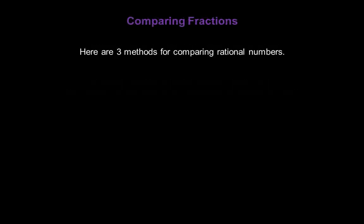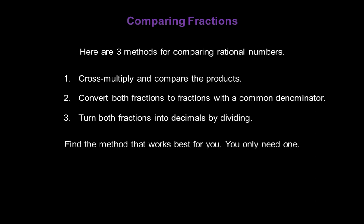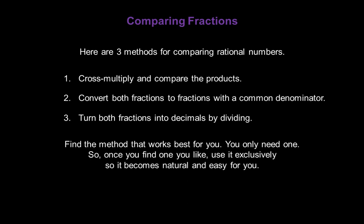I'm going to show you three methods for comparing rational numbers. Method 1: we can cross multiply and compare the products. Method 2: convert both fractions to fractions with a common denominator. Method 3: turn both fractions into decimals by dividing, then compare the decimal values. Find the method that works best for you — you only need one. Once you find one you like, stick with it and use it exclusively so it becomes natural and easy.